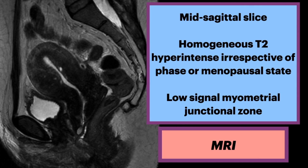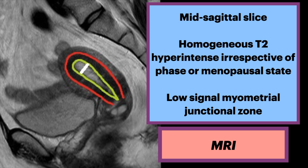On MRI, endometrial thickness is also well assessed. Measurement should be taken at the mid-sagittal slice, similar to ultrasound. The normal endometrium is homogeneously T2 hyperintense regardless of the menstrual cycle phase, and is outlined by the low-signal myometrial junctional zone. Here is a sagittal T2 example showing normal zonal anatomy of the uterus in the anteverted position. The endometrium, outlined in yellow, demonstrates signal intensity slightly higher than simple fluid and urine in the bladder. The outer myometrium demonstrates intermediate signal intensity, whereas the junctional zone, outlined in red, shows relatively low signal intensity.